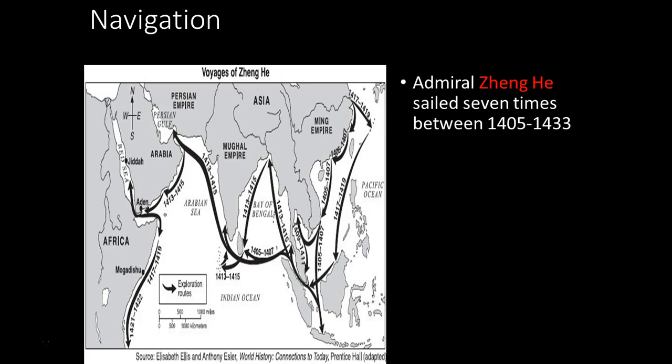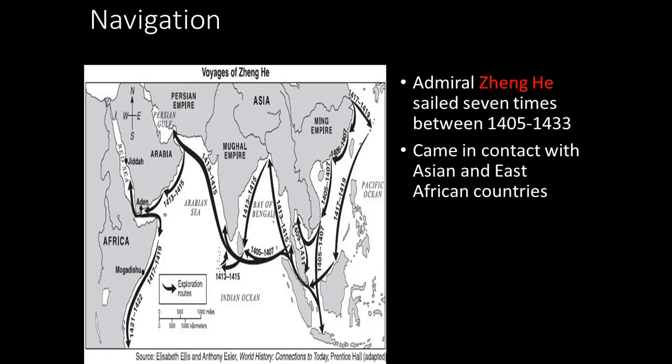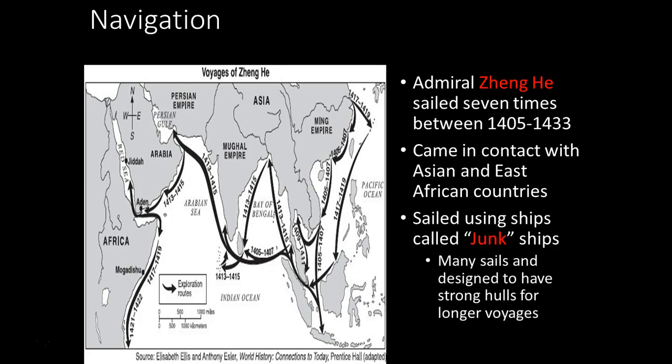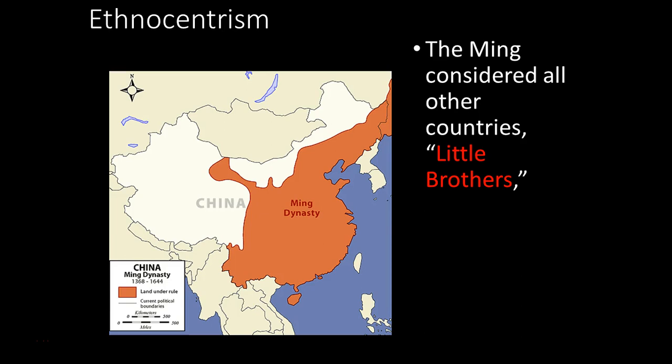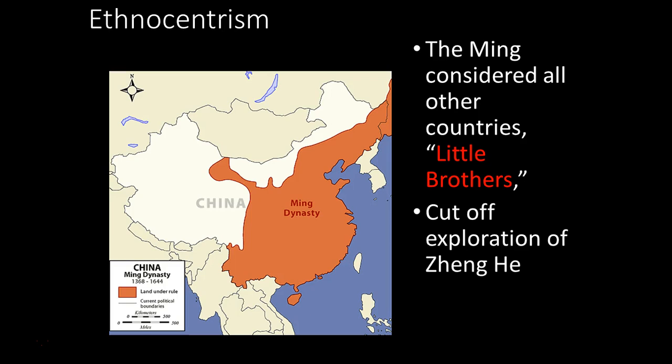The Ming are also famous early on for spreading trade. They sail Zheng He out about seven times; he returns with different animals and spices, using a junk ship with strong construction and many sails. But China's ethnocentrism resurfaces — going back to the Shang Dynasty's idea of being the Middle Kingdom, they start calling other nations 'little brothers.' Eventually they cut off Zheng He's exploration, feeling their culture was so superior that further exploration was a waste of time.